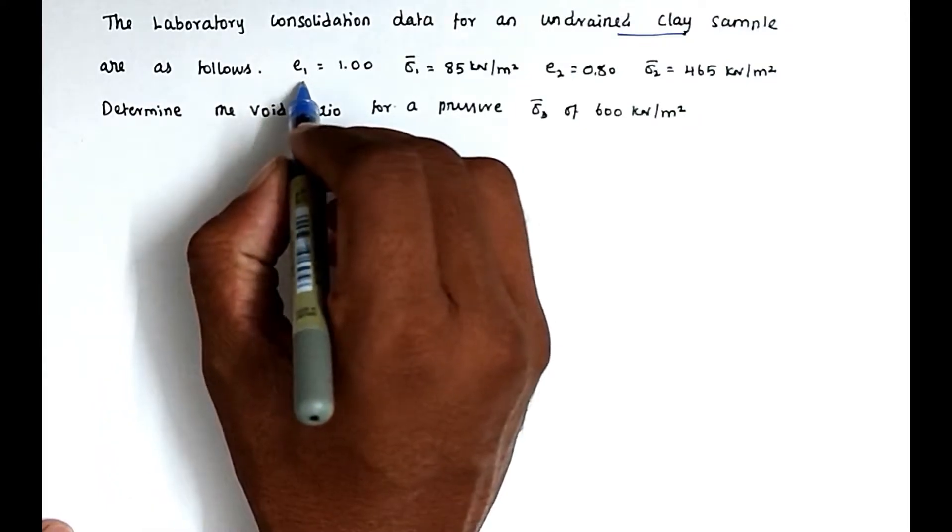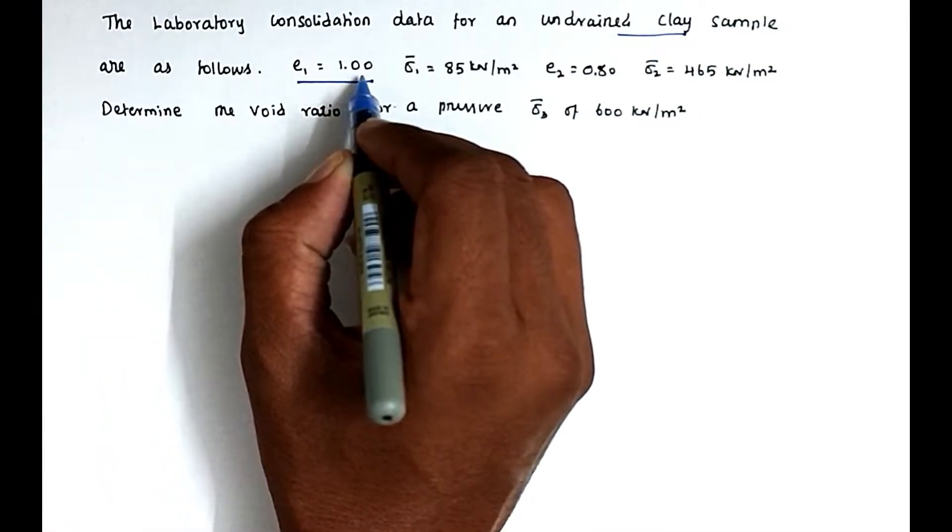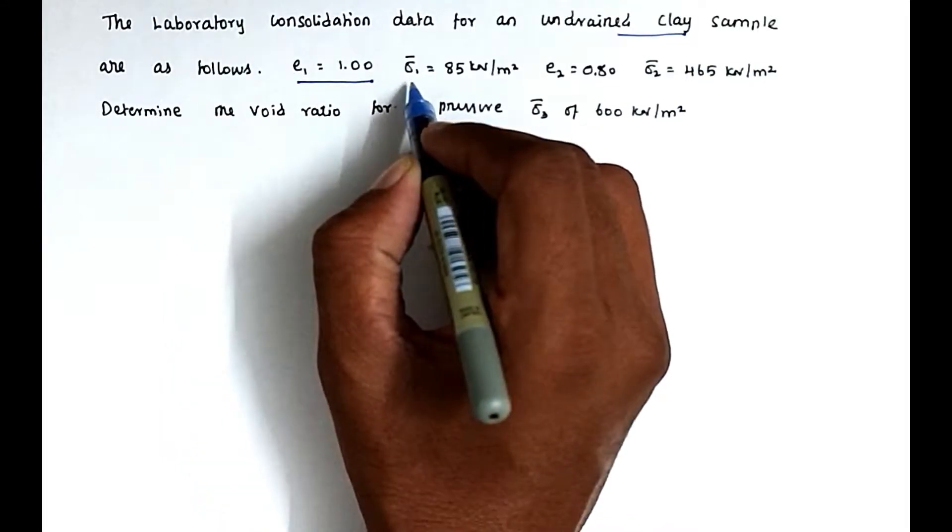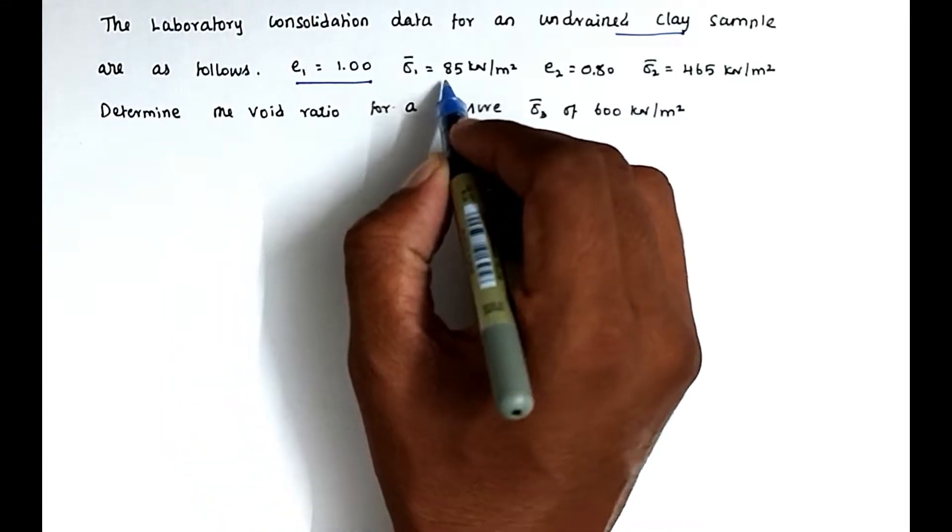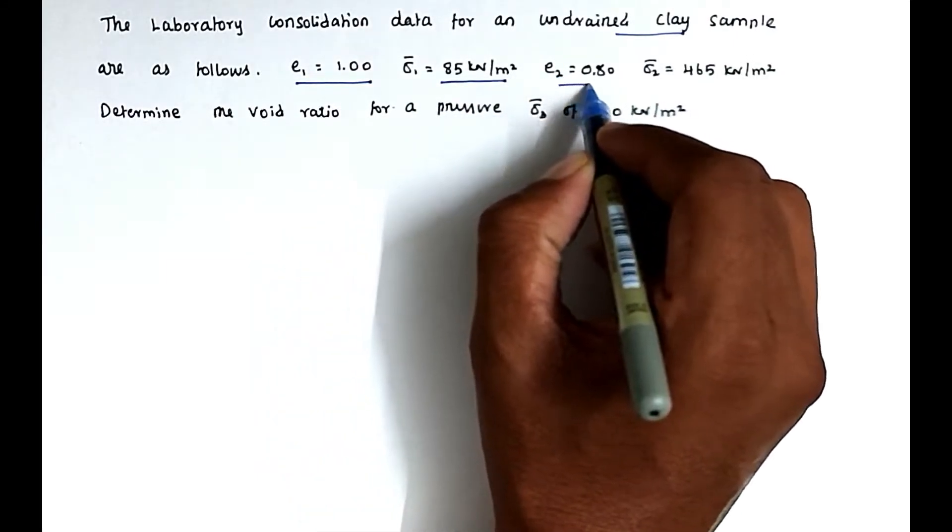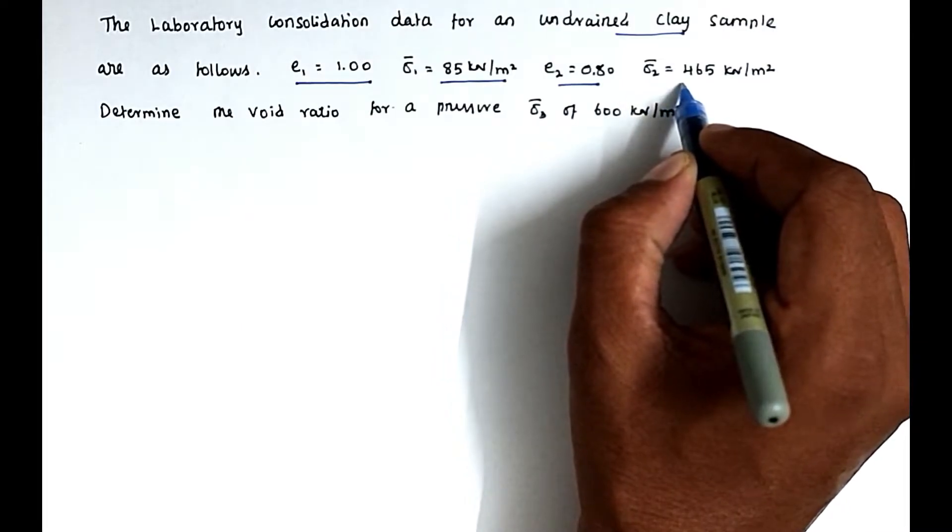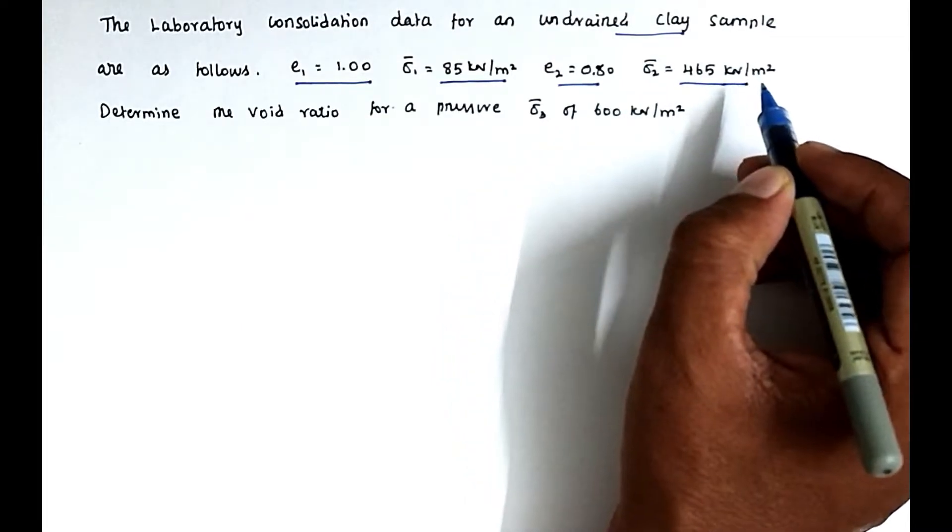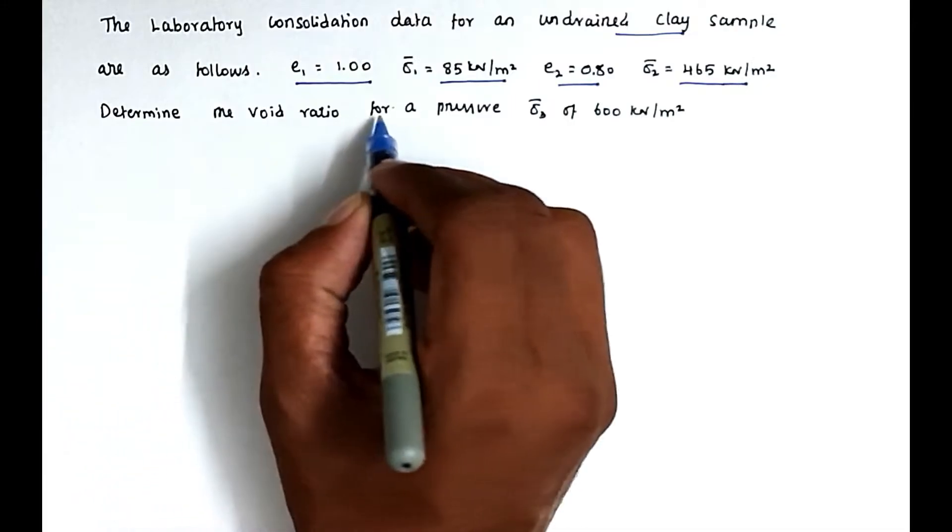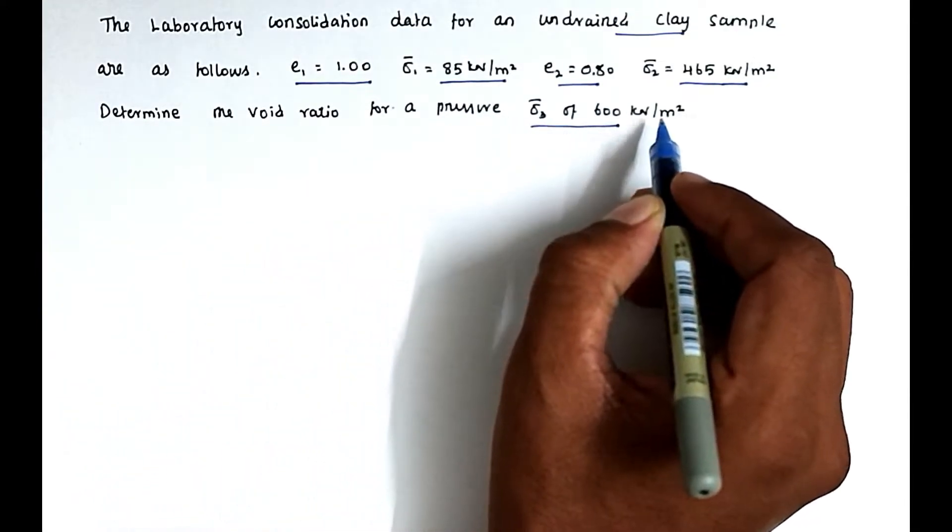First void ratio, initial void ratio e1 equal to 1.00, and corresponding sigma, that is principal stress equal to 85 kN per meter square. Then e2 equals 0.80, and the corresponding sigma 2 value is 465 kN per meter square. Determine the void ratio for the pressure sigma 3, that is 600 kN per meter square.